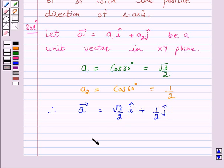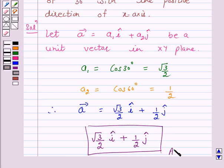Hence, the answer for this question is root 3 over 2 i plus 1 over 2 j. I hope the solution is clear to you. Bye and have a nice day.